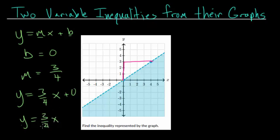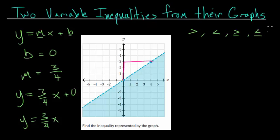This is the equation of the line if it were a solid line with no shading. But since we do have the shading, we know this is an inequality. With inequalities, you're going to see greater than, less than, greater than or equal to, or less than or equal to. We need to determine which case we have here.